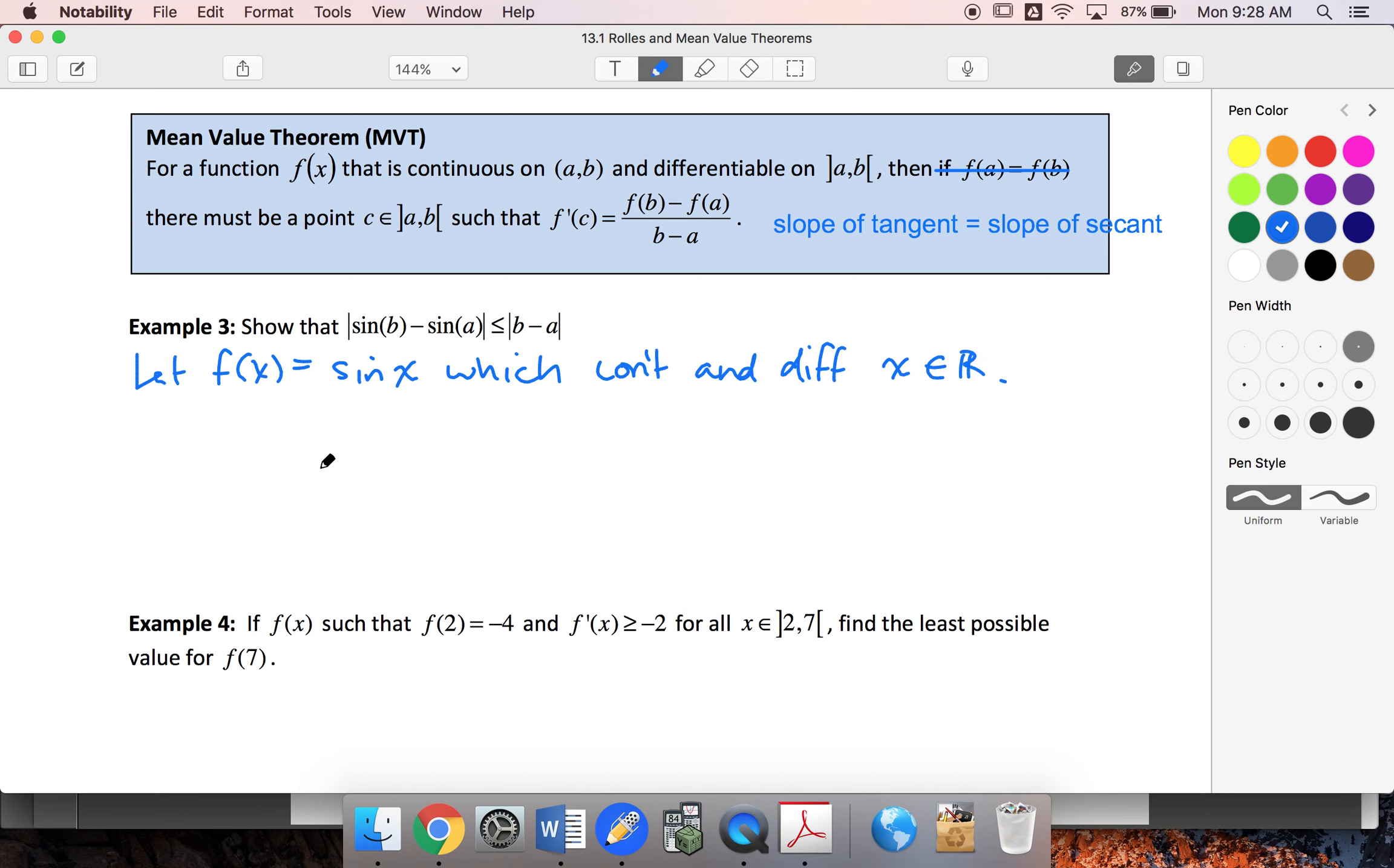Therefore, by Mean Value Theorem, there is some c ∈ (a,b) such that f'(c) = [f(b) - f(a)] / (b - a).